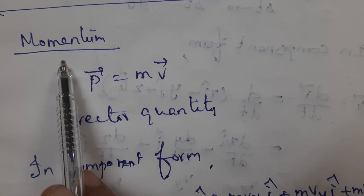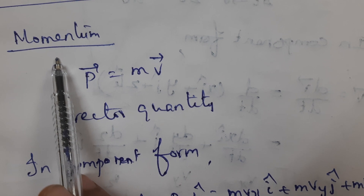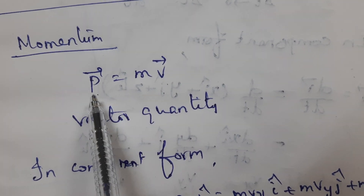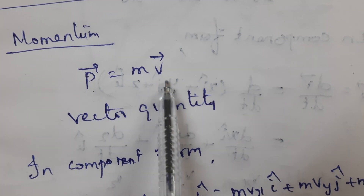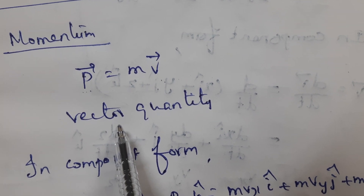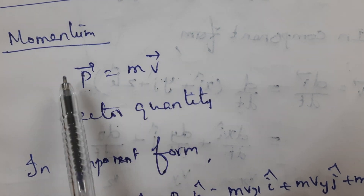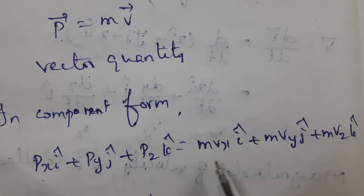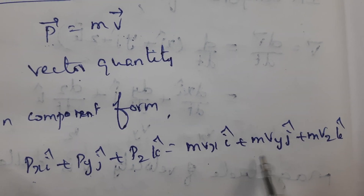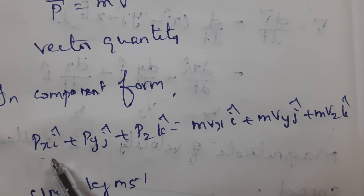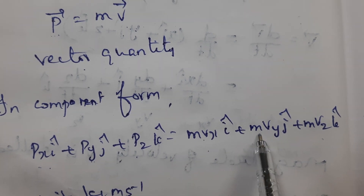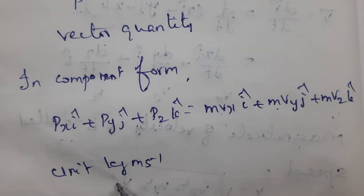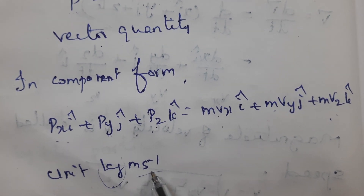Next, momentum — also called linear momentum — which you have heard in lower classes. Linear momentum is defined as the product of mass and velocity: p⃗ = mv⃗. It is a vector quantity; the direction of momentum is in the direction of velocity. In component form: pₓ = mvₓ, pᵧ = mvᵧ, p_z = mv_z. The unit of momentum is kilogram meter per second.